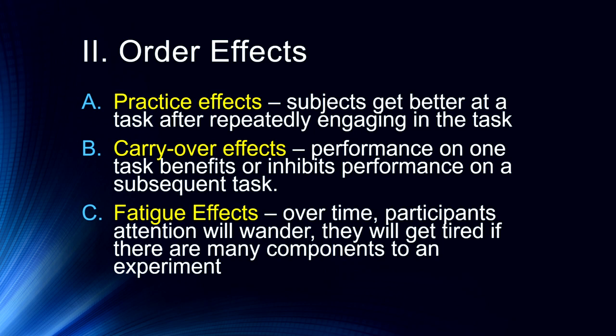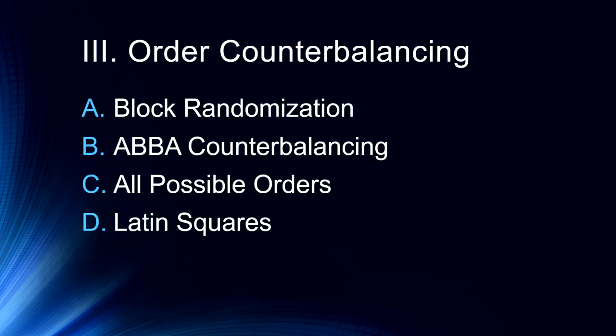Order effects occur when the order of the levels of our independent variable — or of different tasks — influences our results. This gets us to order counterbalancing. We'll start with block randomization and ABBA counterbalancing, which are usually used when we have a large number of repeated trials of the same kind.